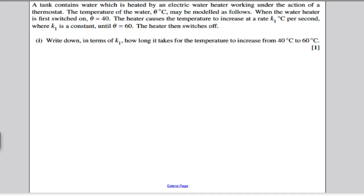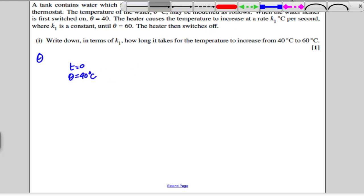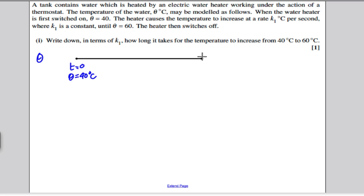We have a water heater and the temperature of the water is given by theta. It tells us that when the heater is first switched on, theta is 40. So we can say that at time 0, theta is equal to 40 degrees Celsius. Then it tells us that the water is heated up from that time until another time later, where theta is now equal to 60.